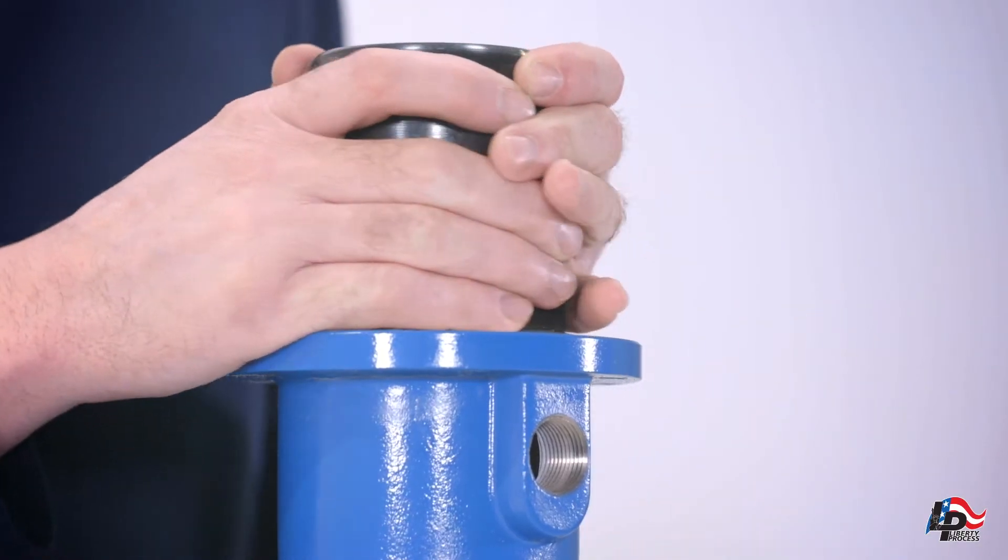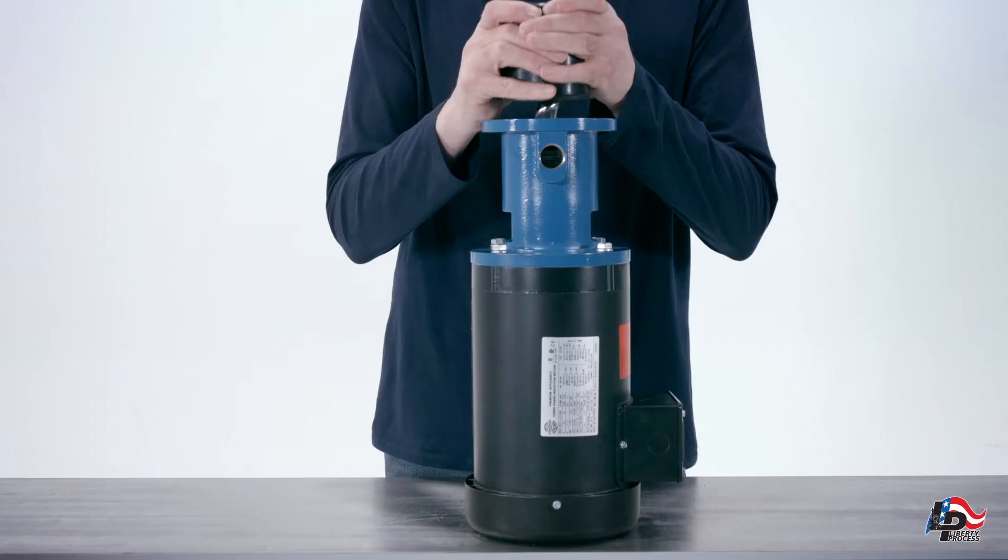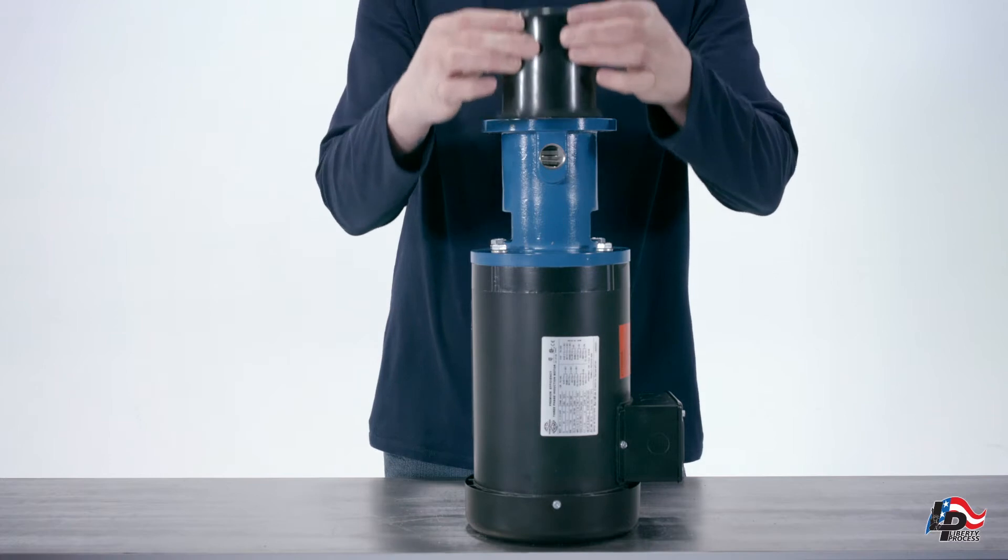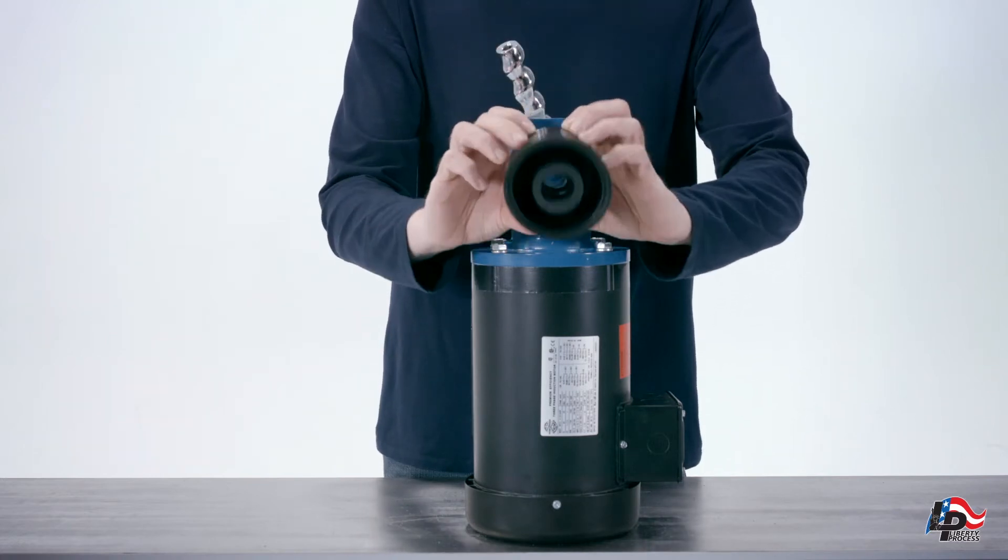Using both hands, remove the pump stator from the pump by lifting it vertically off the pump rotor. The pump rotor, flex joint, and shaft mechanical seal will now be exposed.